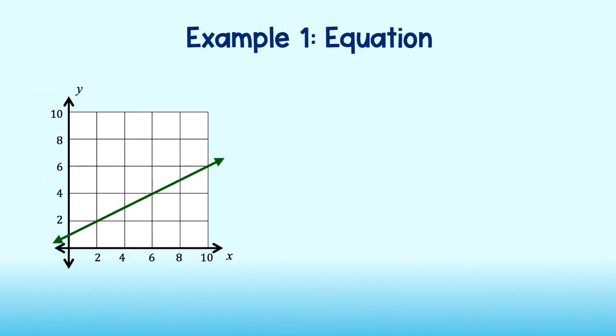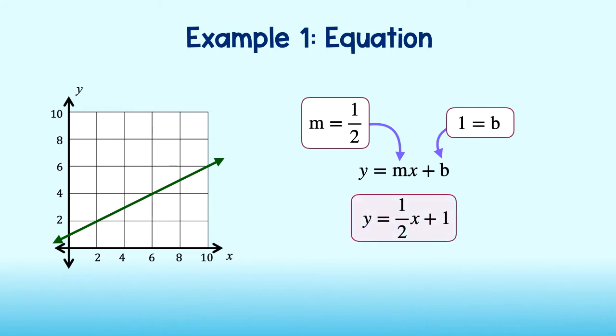Now let's take a look at our original example. We have now found both slope and y-intercept, so we can put it together to form the equation of this line. Remember, the general form is y equals mx plus b. We know that our slope is 1 half, and our y-intercept is 1. This gives us an equation of y equals 1 half x plus 1. This is the equation of our line in slope-intercept form.